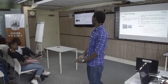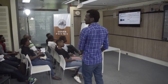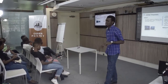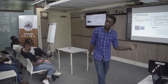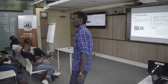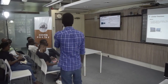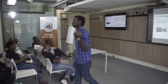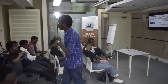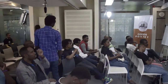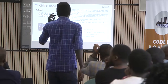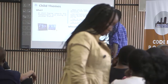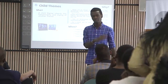Child themes — the main topic of the day. A child theme is like a mirror of the theme you decide to install on your WordPress. So let's say you want to go with the WordPress 2017 theme on your website. A child theme allows you to change some aspect of your site's appearance while preserving the look and functionality of your theme.